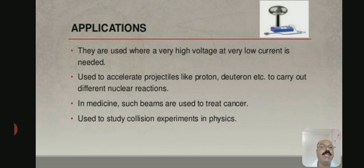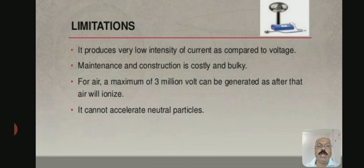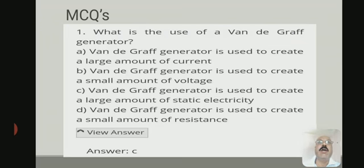Such beams are used to treat cancer and to study collision experiments in physics. Limitations: it produces very low intensity of current as compared to voltage. Maintenance and construction is costly and bulky. For air, a maximum of 3 million volts can be generated, as after that air will ionize. It cannot accelerate neutral particles. These are the limitations of the Van de Graaff generator.